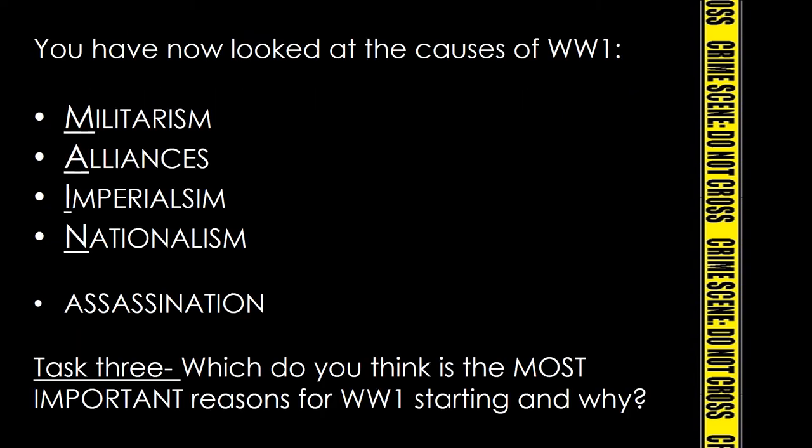You've now looked at the causes of World War 1: Militarism - countries building up their armies to compete; Alliances - the Triple Alliance and Triple Entente; Imperialism - countries trying to grab land and build empires, especially in Africa; and Nationalism - countries being proud and wanting to remain independent, which links closely to this assassination. The event that triggers it all is the assassination of Franz Ferdinand. Task 3: which do you think is the most important reason or reasons for World War 1 starting, and why? There is no right or wrong answer - give your own opinion with a reason.